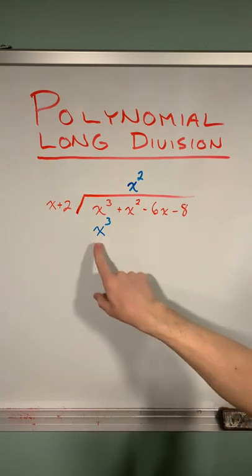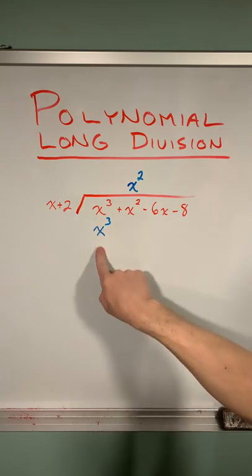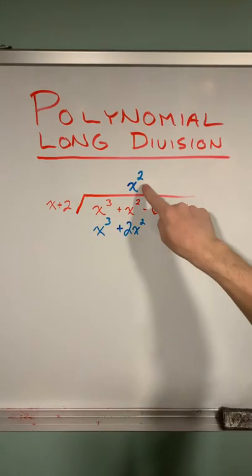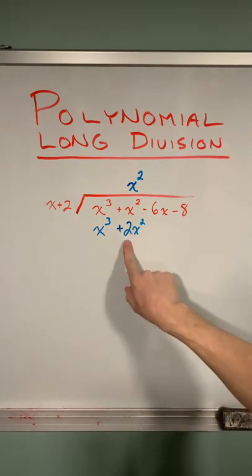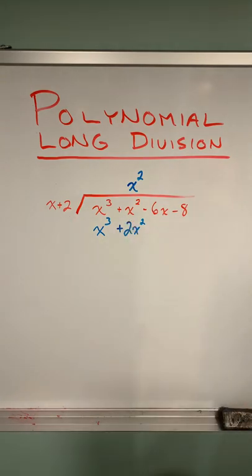We're going to take that x squared and multiply by x and get x cubed. And we'll place that directly below this x cubed. We'll take that same x squared multiplied by this two to get two x squared, placing that below this x squared.